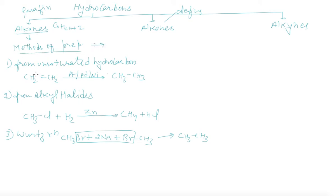In method of preparation, number one, it can be formed from unsaturated hydrocarbon. We will take alkene and reduction takes place, addition of hydrogen. Platinum, palladium, nickel are reducing agents. They will give you alkane.